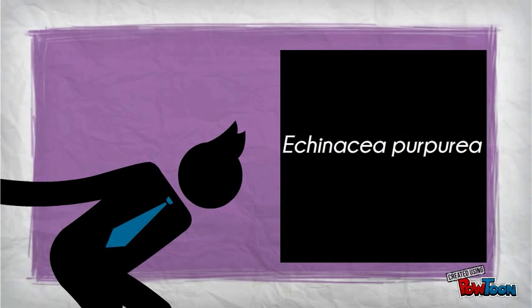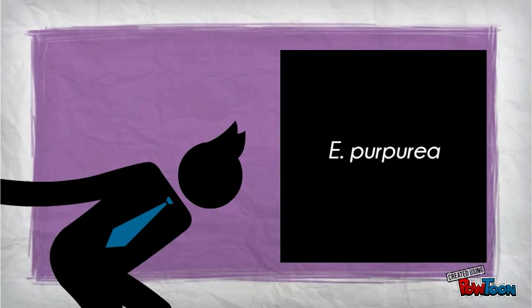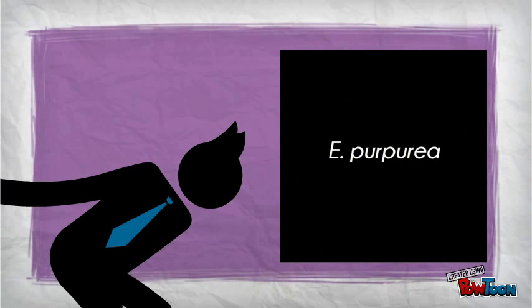Always spell out the scientific name in the title, abstract, and introduction. After this, you may abbreviate the full name to the first letter of the genus and the full epithet.